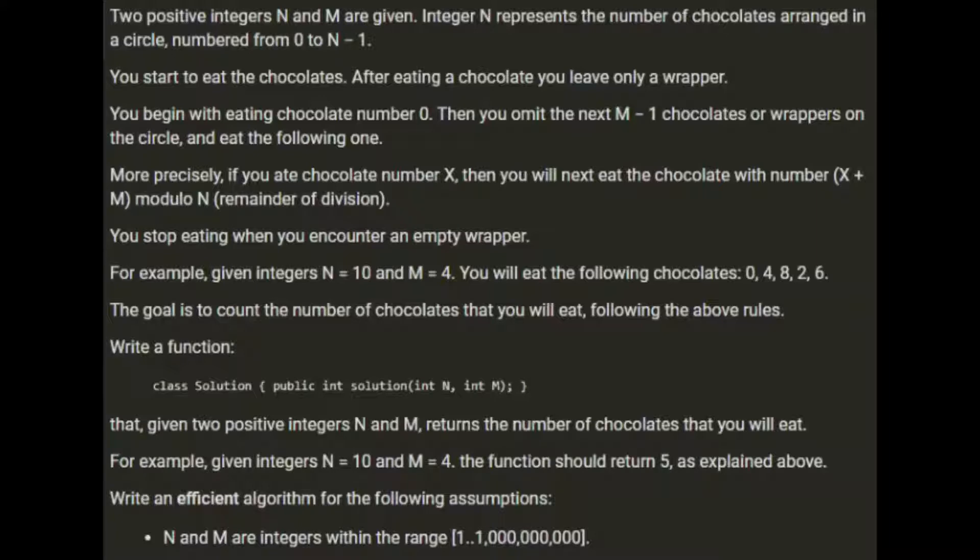Two positive integers n and m are given. Integer n represents the number of chocolates arranged in a circle, numbered from 0 to n-1. You start to eat the chocolates — after eating one you leave only a wrapper. You begin with chocolate number 0, then skip the next m-1 chocolates or wrappers on the circle. More precisely, if you ate chocolate number x, then you will next eat chocolate number x plus m, modulo n.